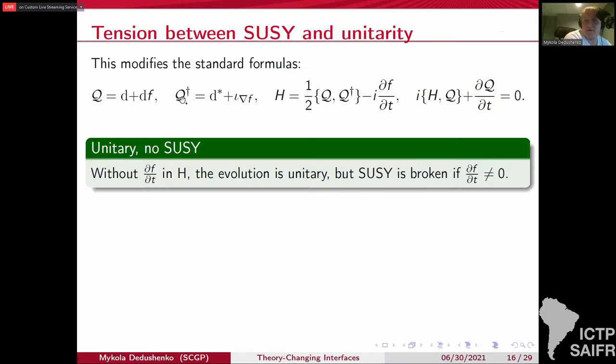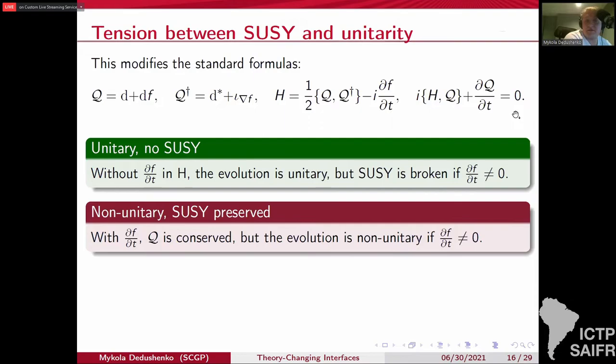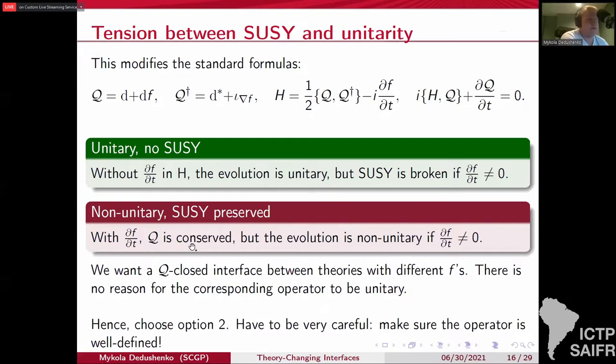And this conservation of Q is expressed by this equation where this additional term reflects the explicit time dependence of F. But this is the conservation law for Q. But now this term breaks unitarity. So this is a non-unitary deformation. But it's actually perfectly fine because what we want to do is an interface that interpolates between theories with different Morse functions. And that interface will act as some operator in the Hilbert space. And there's absolutely no reason for that operator to be unitary because most observables are not represented by unitary operators. But we have to be careful because we actually choose this non-unitary deformation.